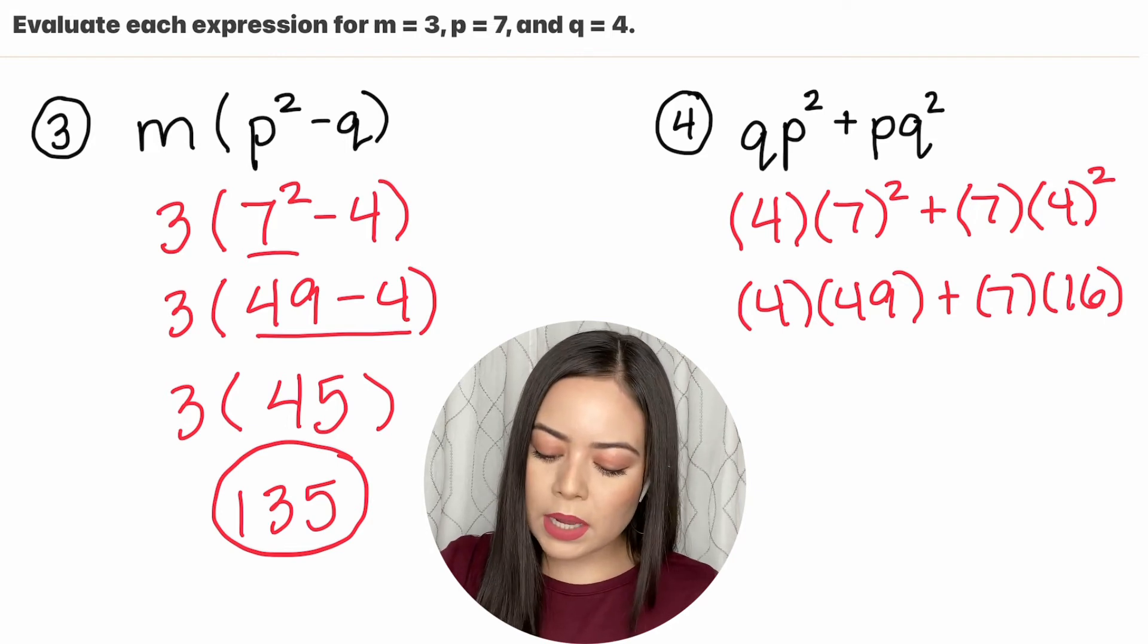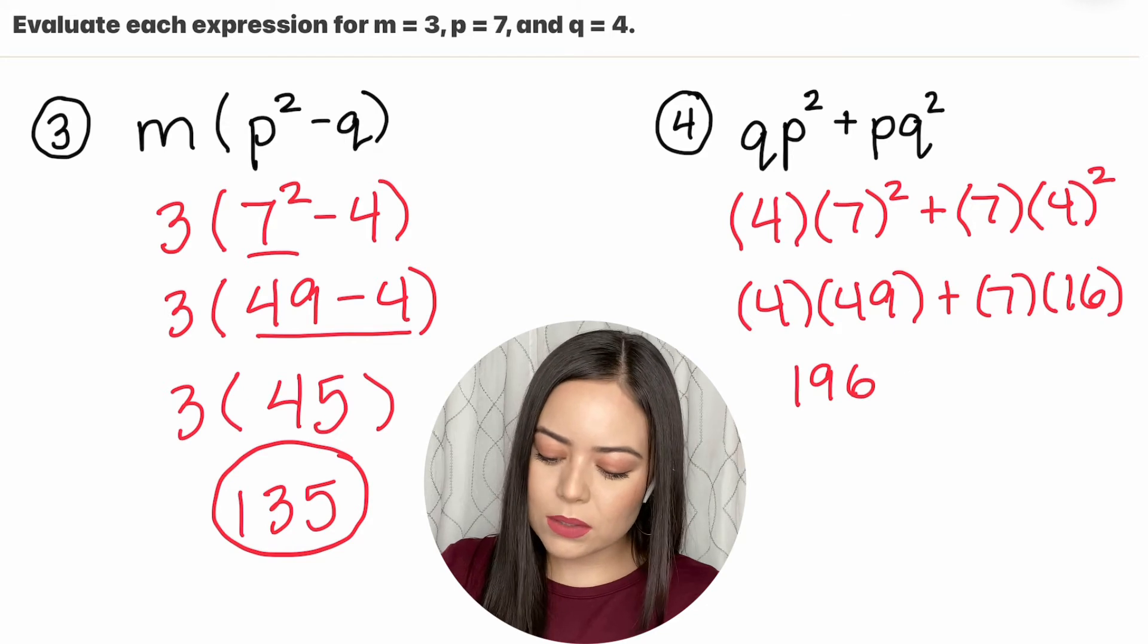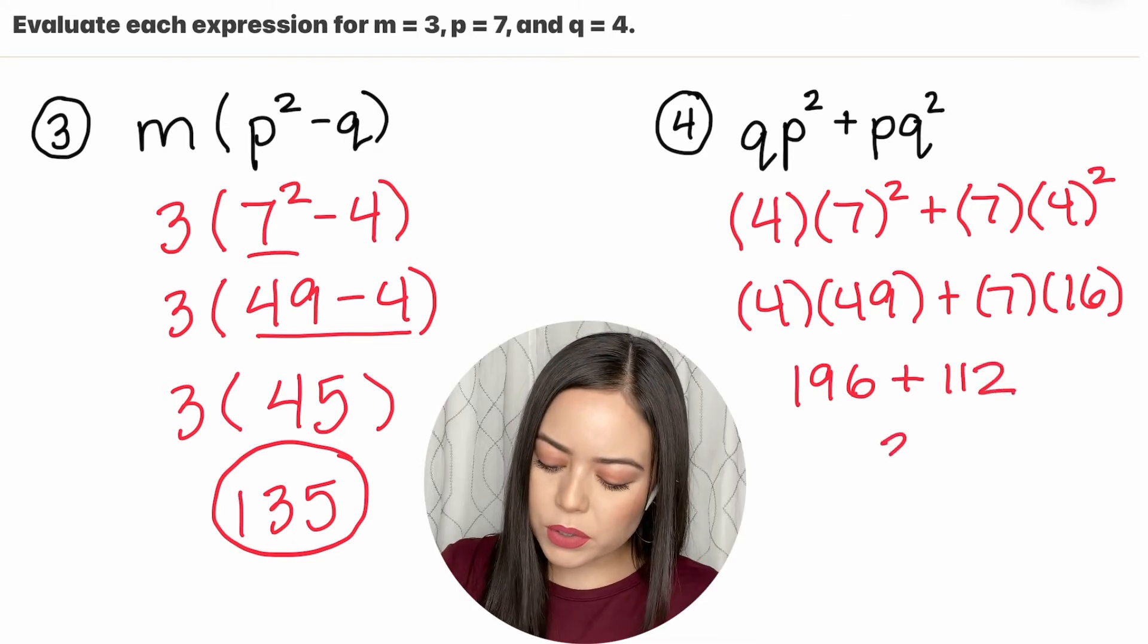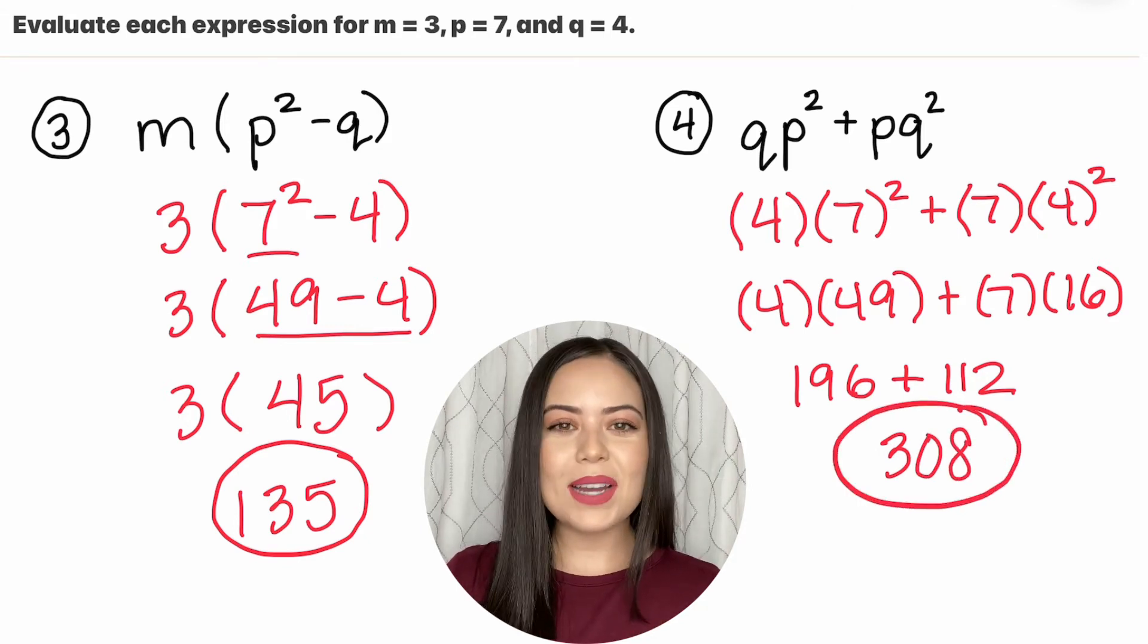Moving on, 4 times 49 is 196 and 7 times 16 is 112 and together that makes 308. So if you ended up getting that answer correct, good job.